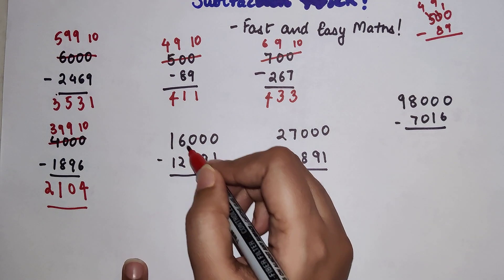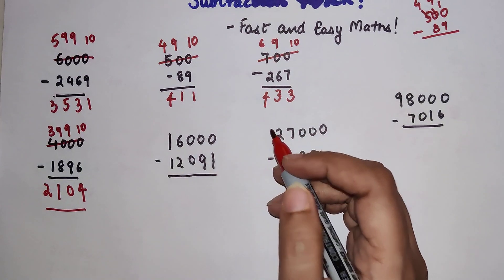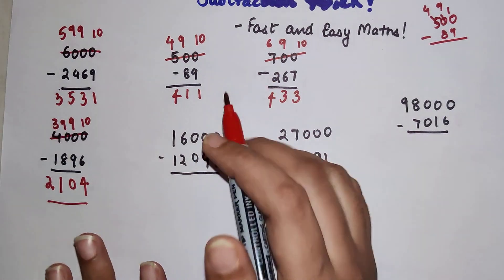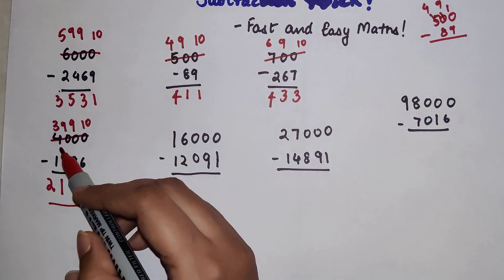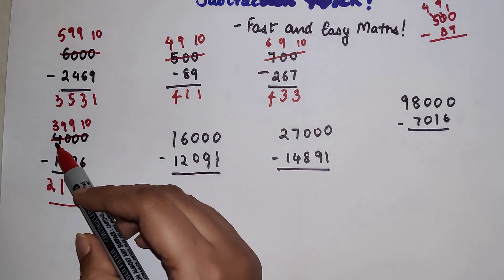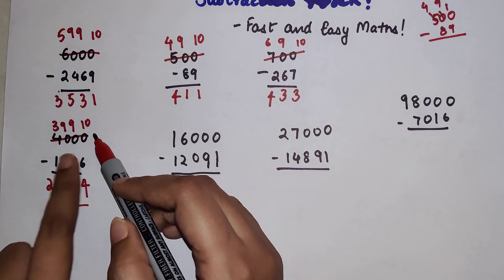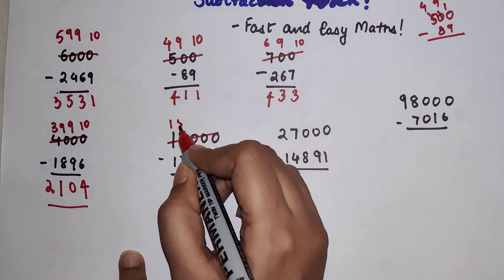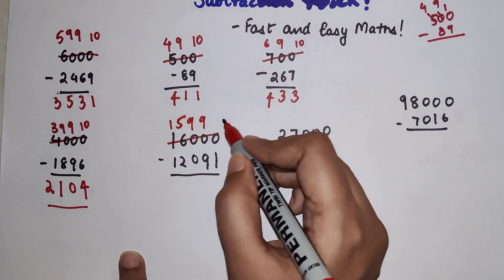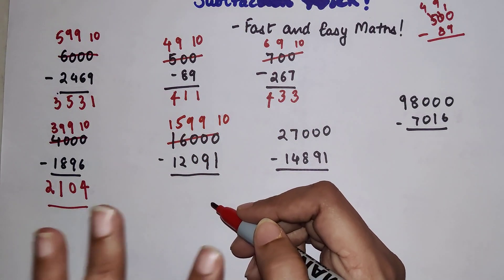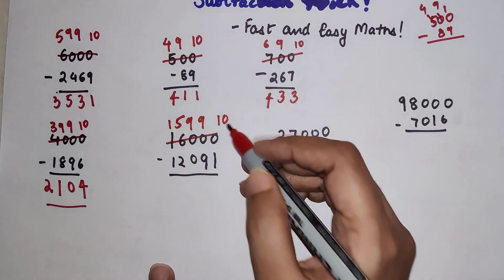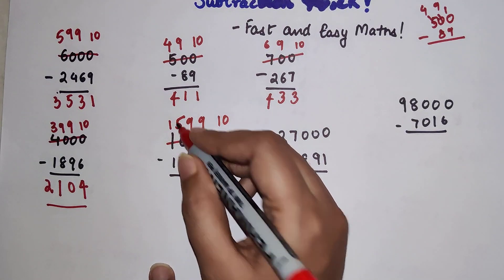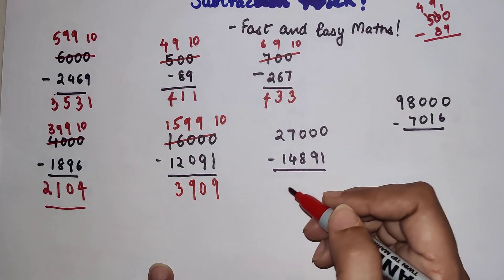Now next one we have over here. So now here I want you to pay a lot of attention. See what happens over here is, here 4000 got reduced and you got 3990. But here since there was a 0, we made it as 10. So here instead of 16000 we will do 1, 5, 9, 9, and 10. I hope you all are getting it. So now 1 taken from 10 gets you 9, 9 taken from 9 gets you 0, 0 taken from 9 gets you 9, and 12 taken from 15 gets you 3.